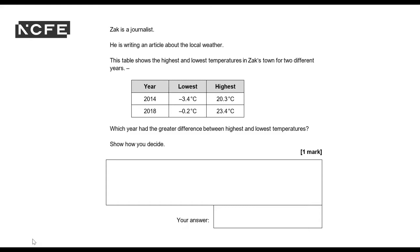Zach is a journalist writing an article about the local weather. This table shows the highest and lowest temperatures in Zach's town for two different years. Which year had the greater difference between highest and lowest temperatures? Show how you decide.